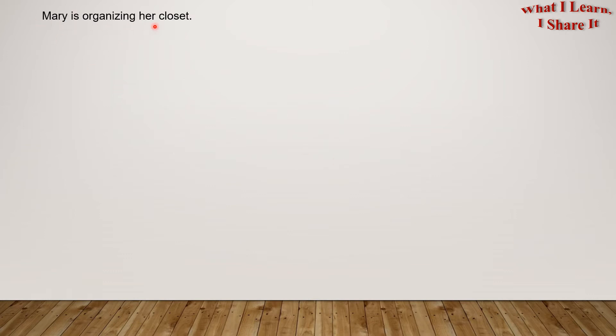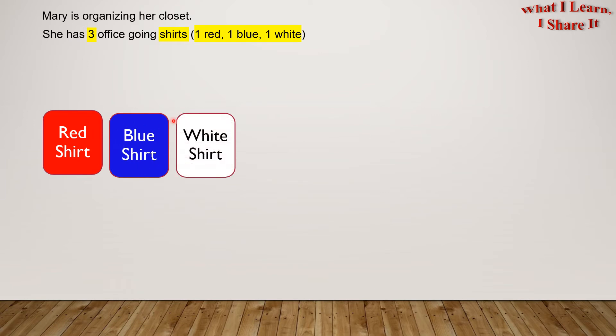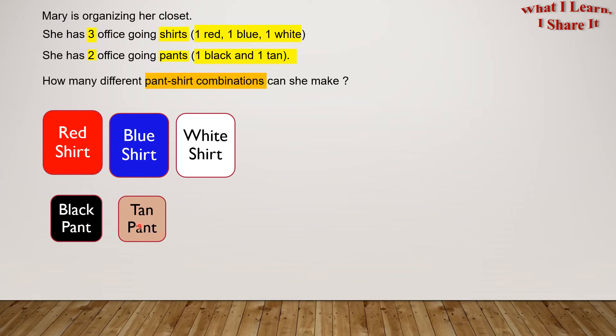Mary is organizing her closet. She has three office-going shirts: one red, one blue, and one white. She has two office-going pants: one black and a tan. Here is her black pant and her tan pant. How many different pant-shirt combinations can she make?